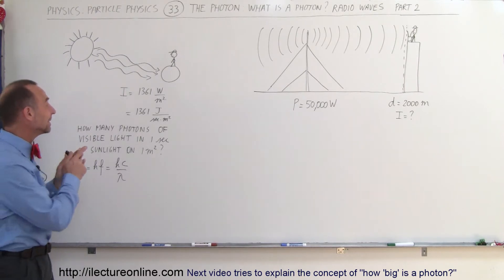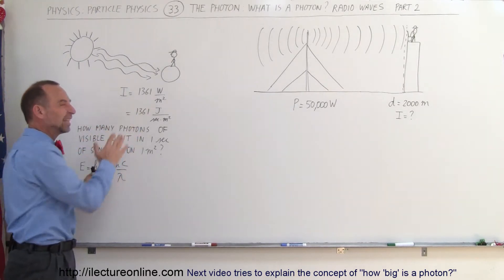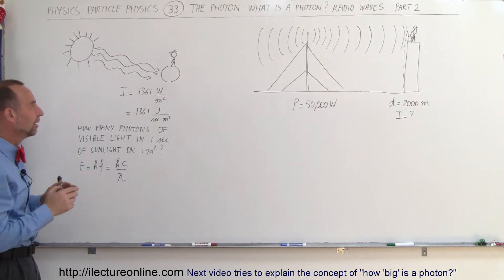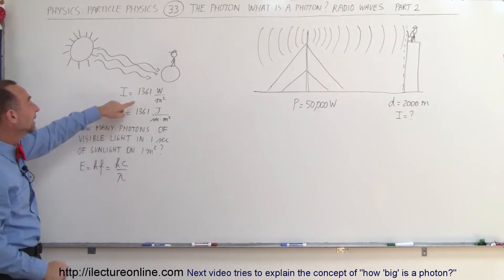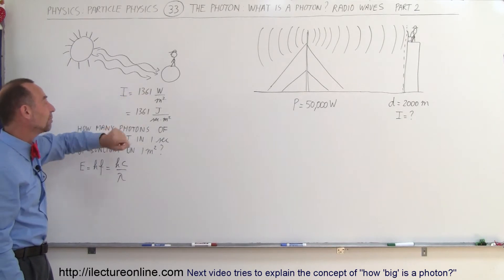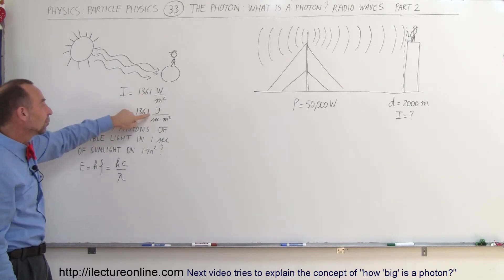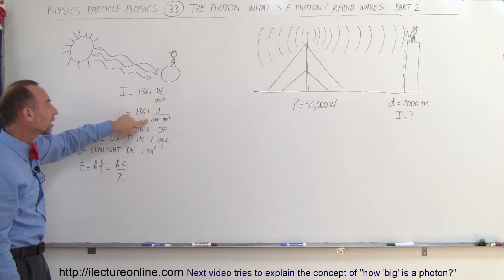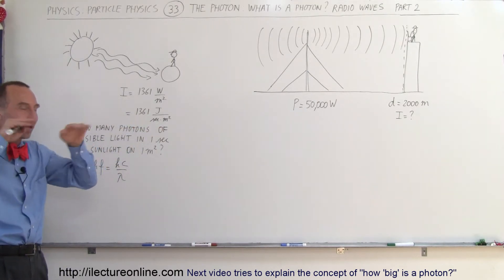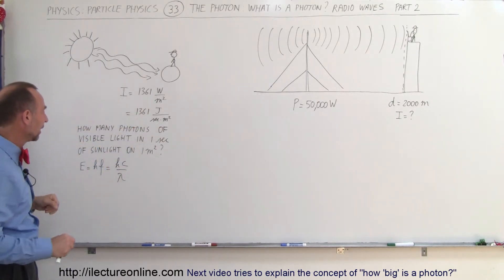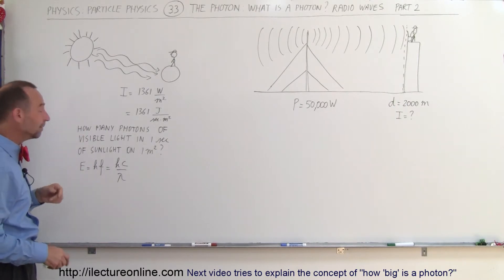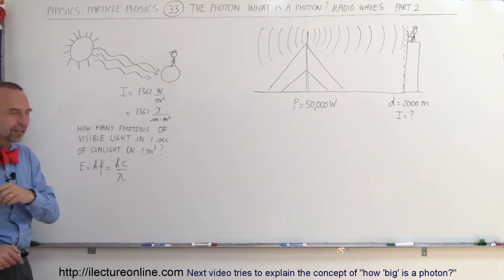We know that the intensity of sunlight reaching the Earth — not the surface of the Earth, of course, because it has to make it through the atmosphere, but at least at the top of the atmosphere — the intensity is 1,361 watts per square meter, which is 1,361 joules per second for every square meter. How many photons of visible light in one second of sunlight on one square meter? Let's go ahead and figure that out.